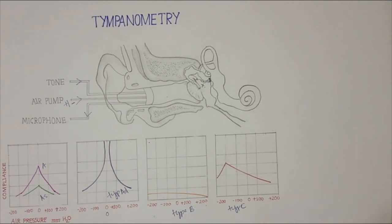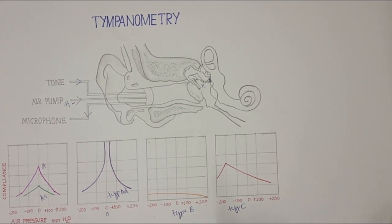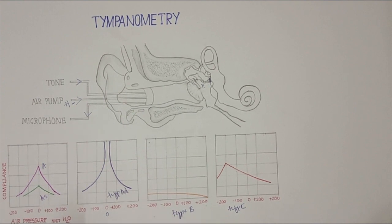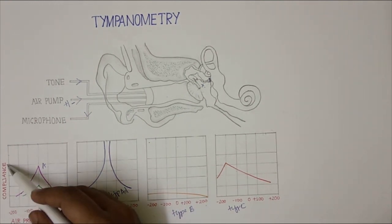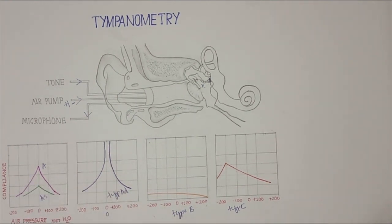Impedance is nothing but the resistance offered by the tympanic membrane and ossicles for sound transmission. The reverse of impedance is called admittance — how much energy is passing through the tympanic membrane and ossicles. More the admittance, more the energy is passing through. Admittance is otherwise also called compliance — that is, how much effectively the tympanic membrane is vibrating.